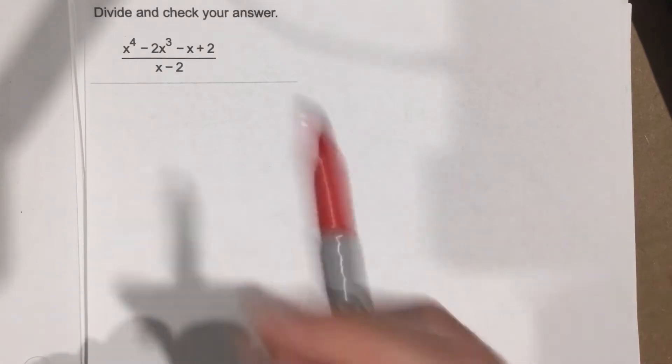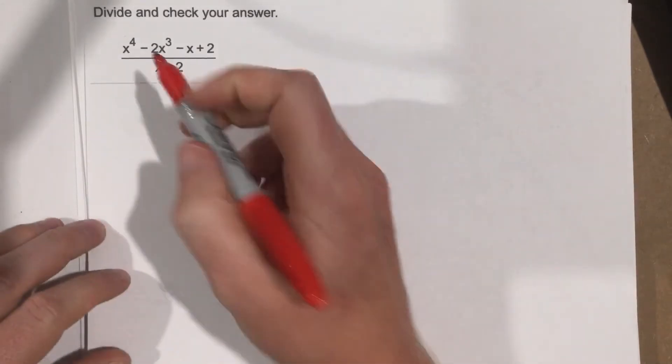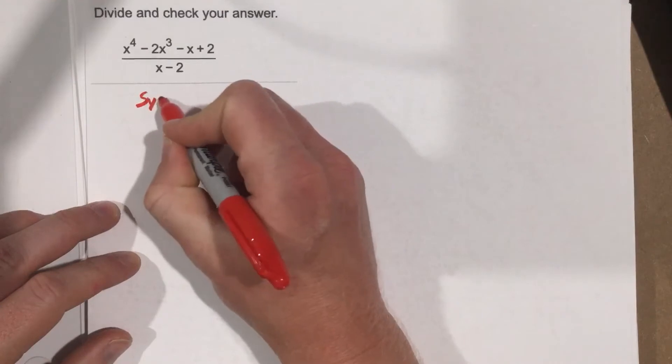I think the smartest thing to do anytime you have a degree 1 binomial on the bottom is synthetic division. It's pretty quick.